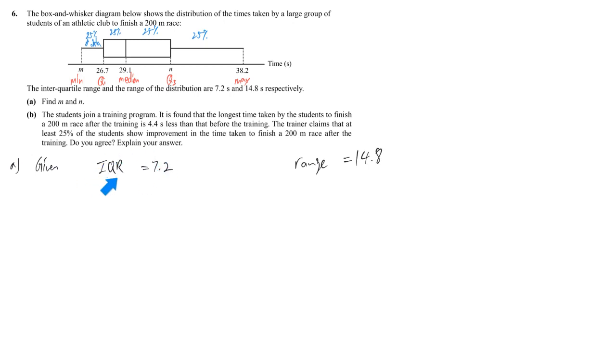After we write down the given information we try to evaluate it. So IQR based on our understanding means Q3 minus Q1. In this case Q3 is n while Q1 is 26.7. So we just solve this equation, we get 33.9.